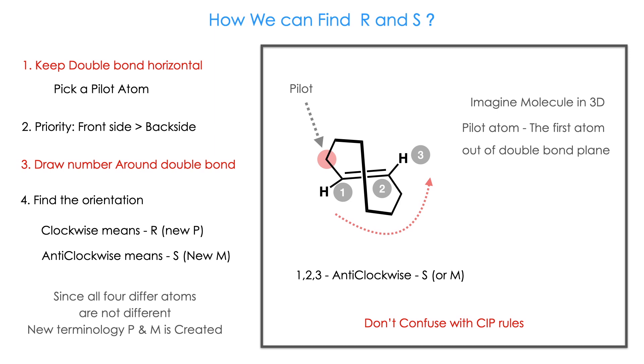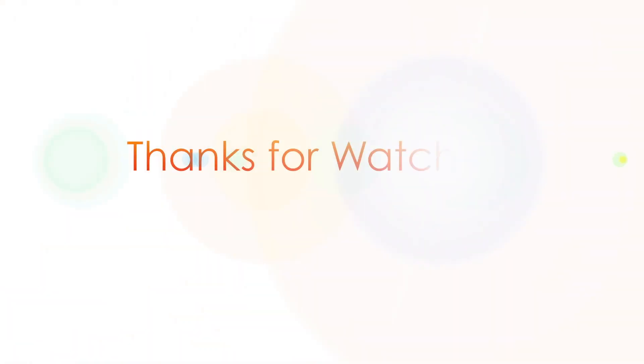Here thick line represents front side, thin line represents back side. The one important thing I want to say here is don't confuse with CIP rule. Here pilot atom, then the orientation, that's all.